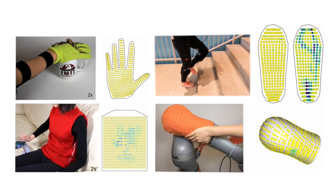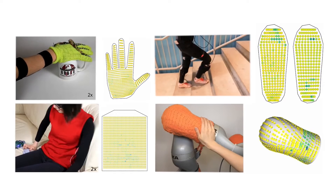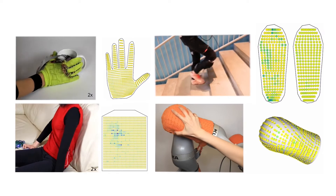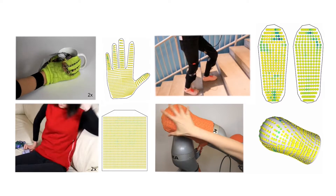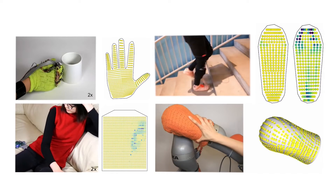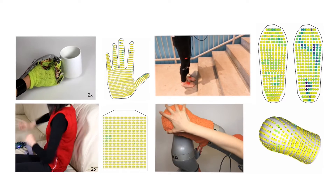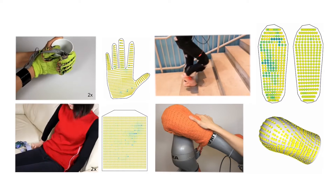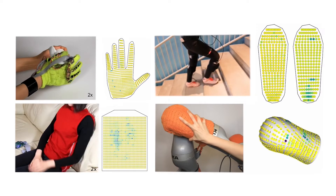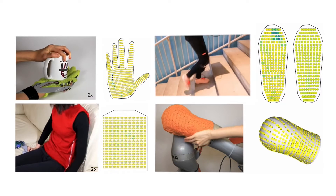We humans perceive the environment from multiple sensory modalities — for example, vision, touch, and sound. If we want robots to perceive and sense their environments, we have to add sensors to the robots. Some sensors could be, for example, RGB cameras, depth cameras, LiDAR sensors, audio sensors, or tactile sensors. Part of my research is trying to help build these kinds of sensors to expand the robot's sensing capabilities, specifically for tactile sensing.